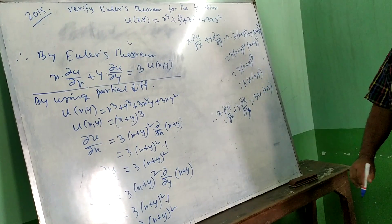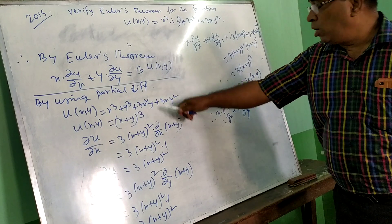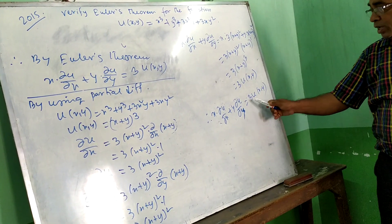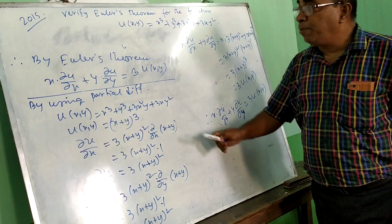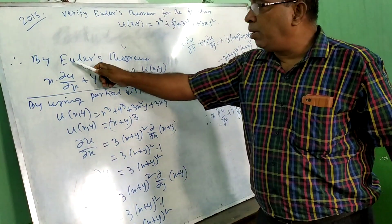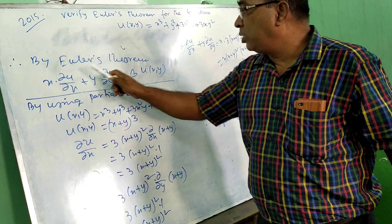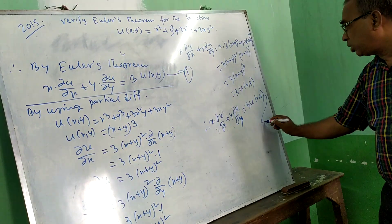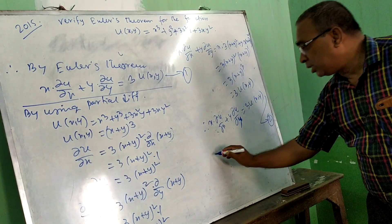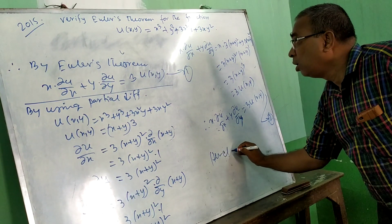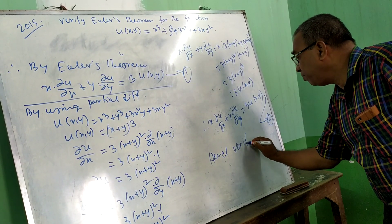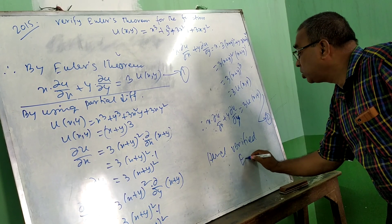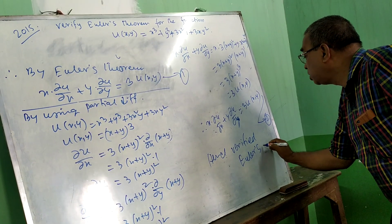So we can see that by partial differentiation we are proving x·(∂u/∂x) + y·(∂u/∂y) = 3·U(x,y), and by Euler's theorem we are also proving this. Equation 1 and equation 2 are the same — hence Euler's theorem is verified.